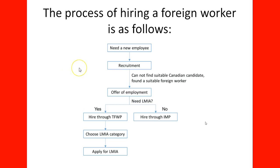In more detail, the process is as follows. The Canadian employer needs a new employee and begins a recruitment process, posting jobs and ads in different places. If they cannot find a suitable Canadian candidate or permanent resident but find an applicant from abroad — a foreign worker — they can issue an offer of employment. The key question is whether that offer of employment requires an LMIA. If yes, they hire the foreign worker through the Temporary Foreign Worker Program, choosing the appropriate LMIA category and applying for LMIA. If no LMIA is needed, they hire through the International Mobility Program.